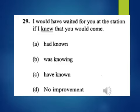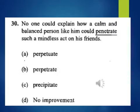Question 29: I would have waited for you at the station if I knew that you would come. 'Knew' is underlined. A, had known; B, was knowing; C, have known; D, no improvement. Question 30 — the last question on sentence improvement for this session: No one could explain how a calm and balanced person like him could penetrate such a mindless act on his friends. 'Penetrate' is underlined. A, perpetuate; B, perpetrated; C, precipitate; D, no improvement.